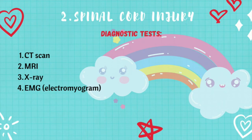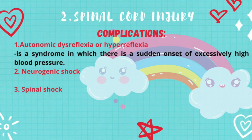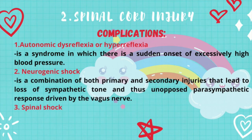There are many possible complications for spinal cord injury, but these three are the most common. The first is autonomic dysreflexia or hyperreflexia, a syndrome in which there is a sudden onset of excessively high blood pressure. It is more common in people with spinal cord injuries involving the thoracic nerves at or above T6. It presents with a dangerous spike in blood pressure, slow heartbeat, constriction of peripheral blood vessels, and other changes in autonomic functions.